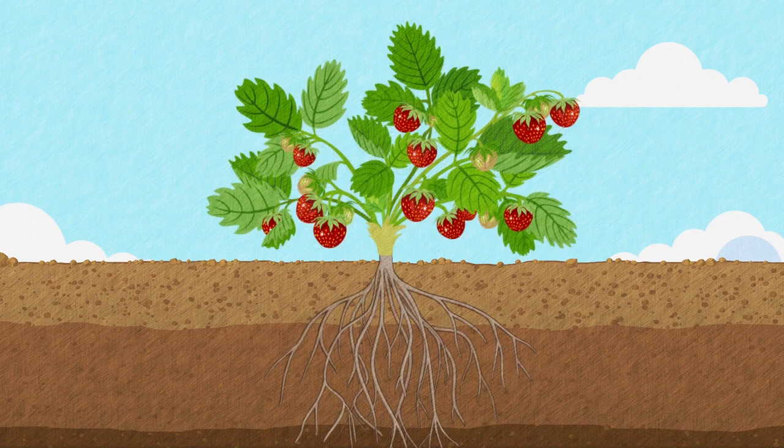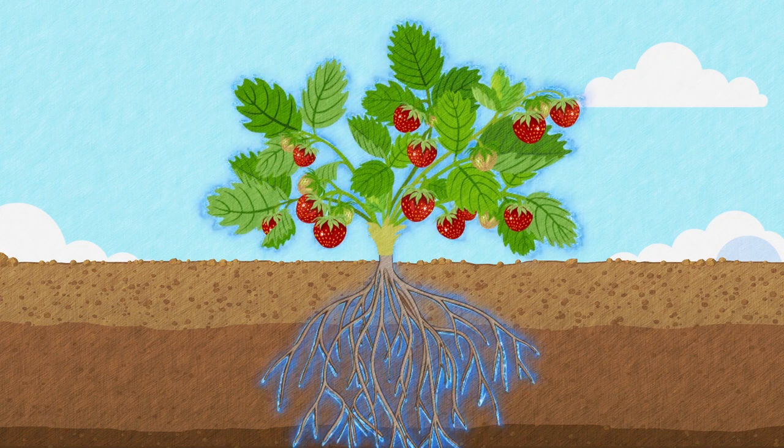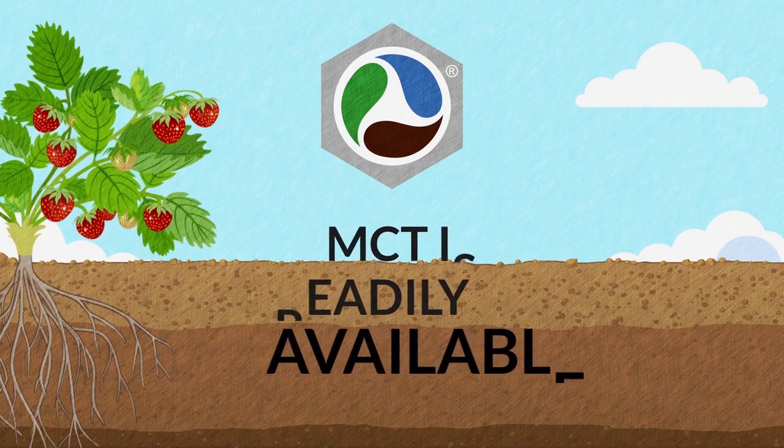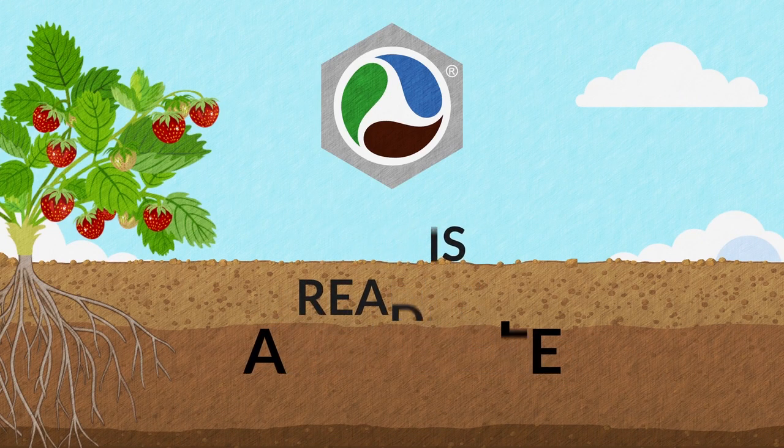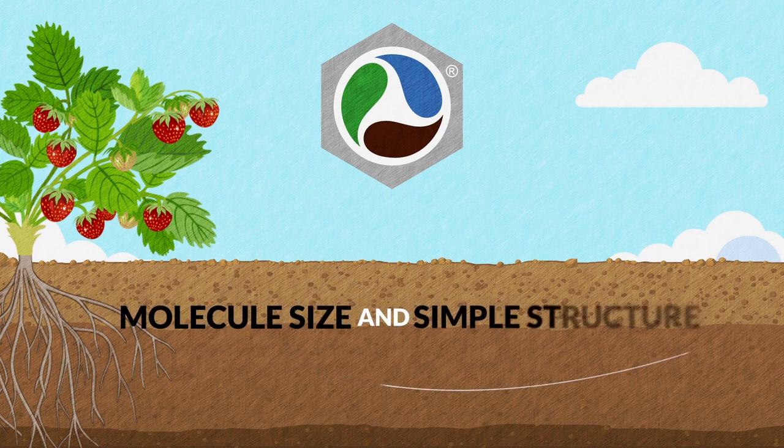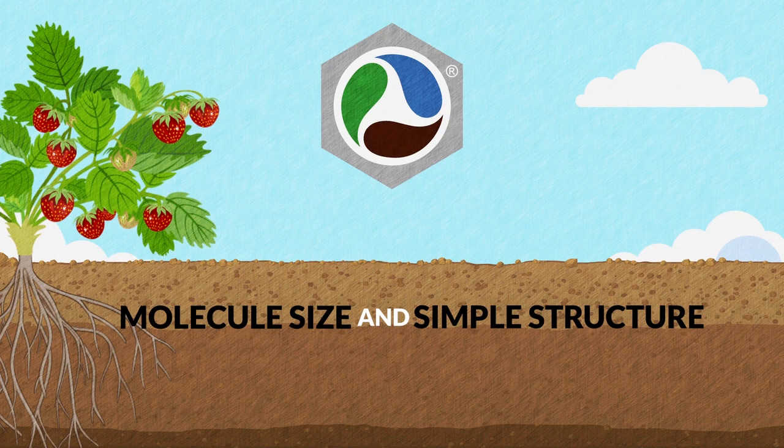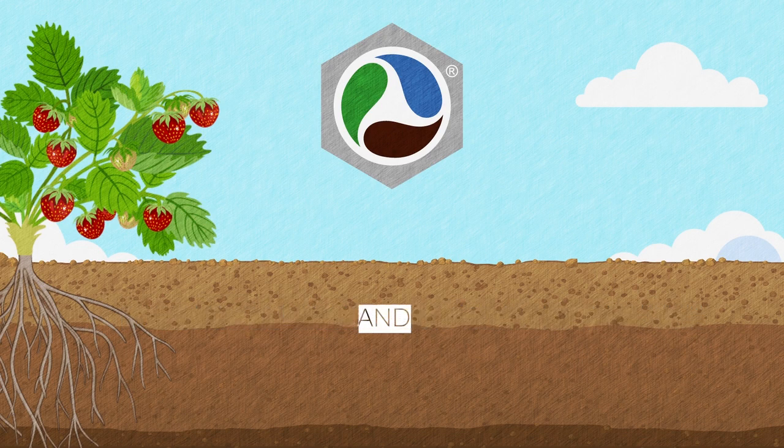With carbon and nutrients immediately available, plants and microbes can flourish. So to review. Number one, MCT is readily available and does not need additional processing within the soil. Number two, MCT's carbon molecule size and simple structure allow it to be easily assimilated, either through both foliar and soil application.